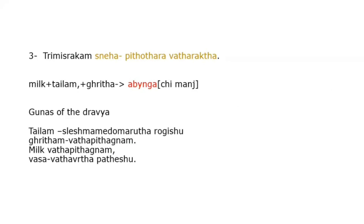What are the gunas of these dravyas taking part in the particular combination — Misrakam? Taila is Sleshma and Medho; Ghrita is Vata-Pitta-kirinam; milk is Vata-Pitta-kirinam; and Lasa is Vata-Rakta-Pitta-shamaka. These are the gunas of these four drugs, and this combination is used in Vata Rekta and Pittottara conditions.